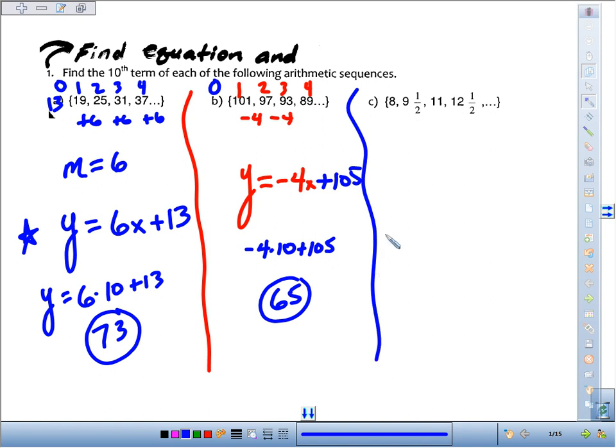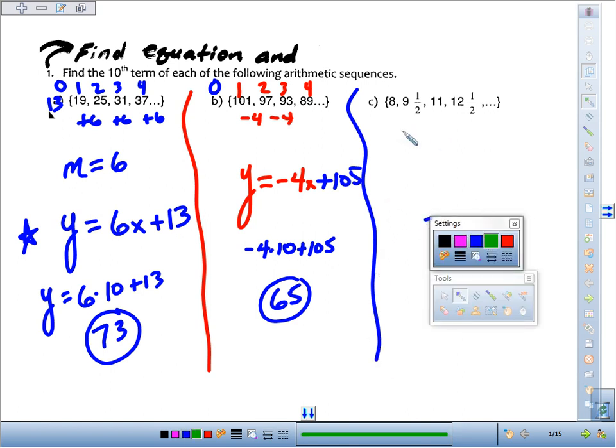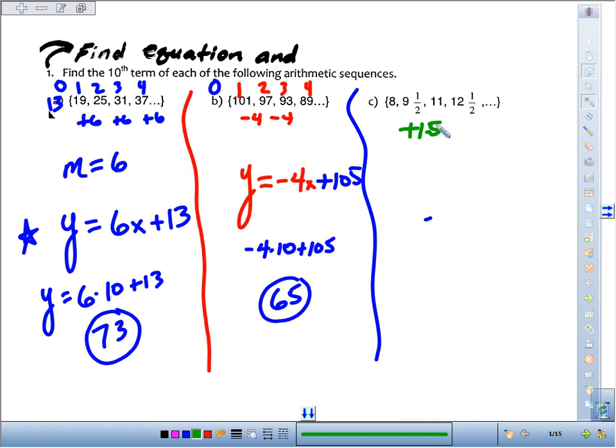And part C, we've got 8, 9 1/2, 11, 12 1/2. In each case, we are adding 1.5. So it's over 1, up 1 1/2, over 1, up 1 1/2. That's going to be our slope, is 1.5.